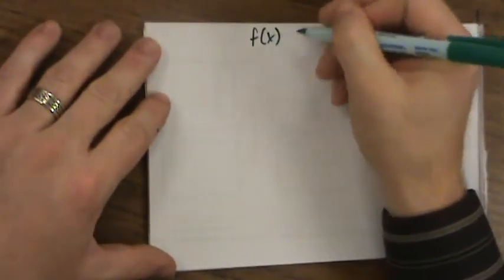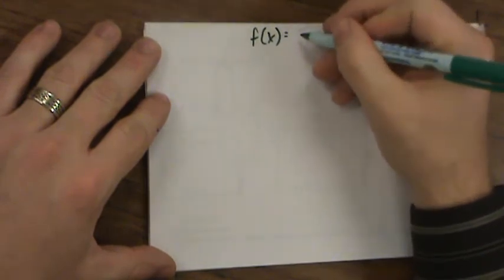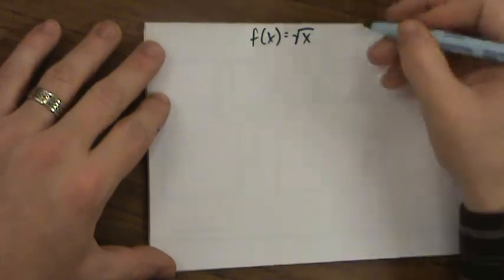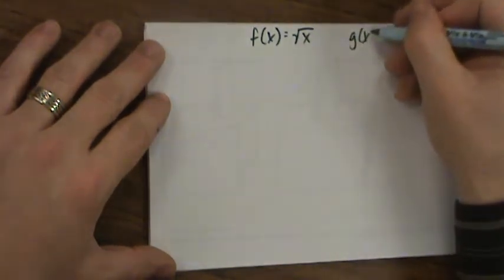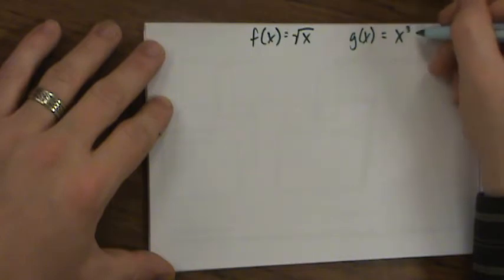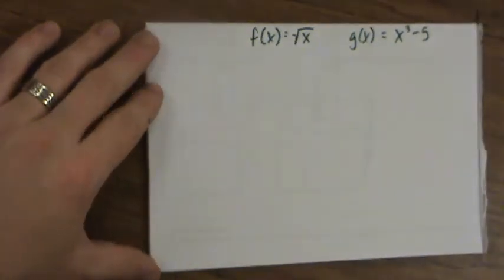Let's say we have two functions, f(x) and g(x). f(x) will be the square root of x and g(x) will be x to the third minus 5. We've got these two functions.